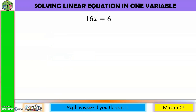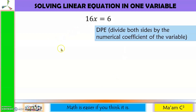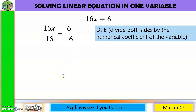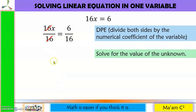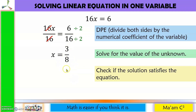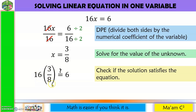Another example: 16x equals 6. We apply DPE, dividing both sides by 16. Then 16 and 16 cancel. Since 6 and 16 are both divisible by 2, we simplify: 6 divided by 2 is 3, and 16 divided by 2 is 8, giving x equals 3 over 8. Checking: 16 times 3 over 8 — 16 times 3 is 48, and 48 divided by 8 equals 6. They are equal, so x equals 3/8 is correct.